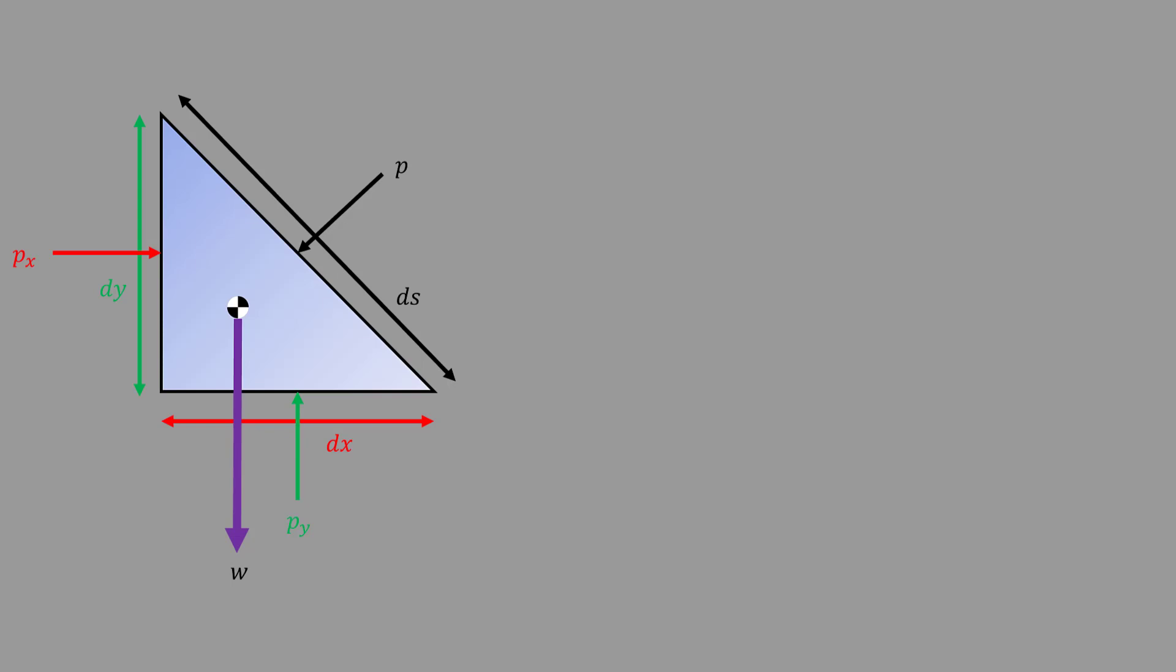Also the weight of the wedge-shaped fluid element can be given as W equals m times g, which is equal to rho times v times g. After rearranging, it becomes rho into g into v. Hence, W equals half rho g dx dy.